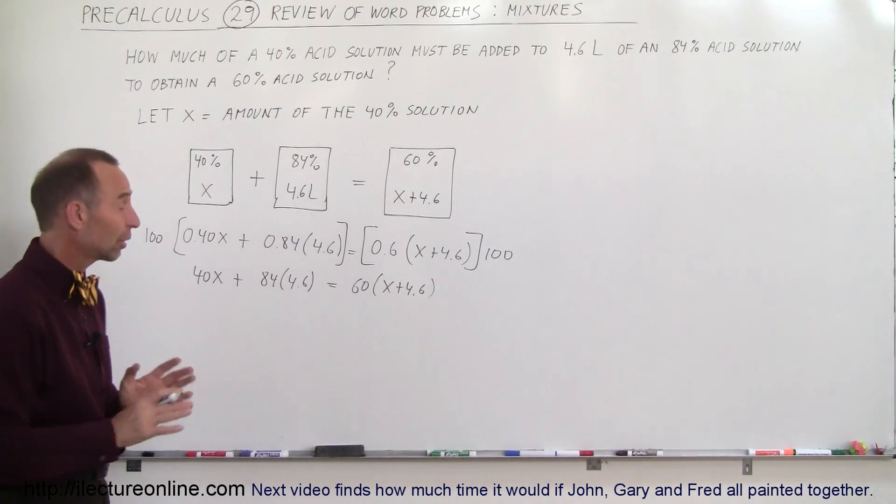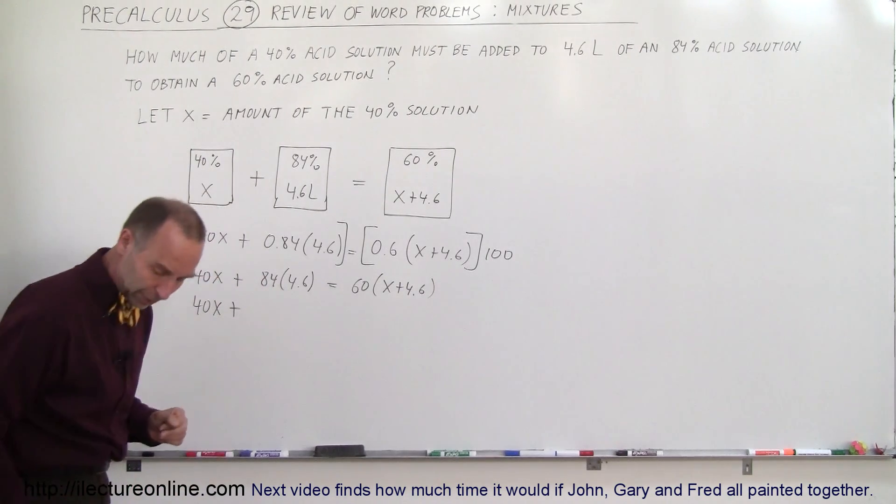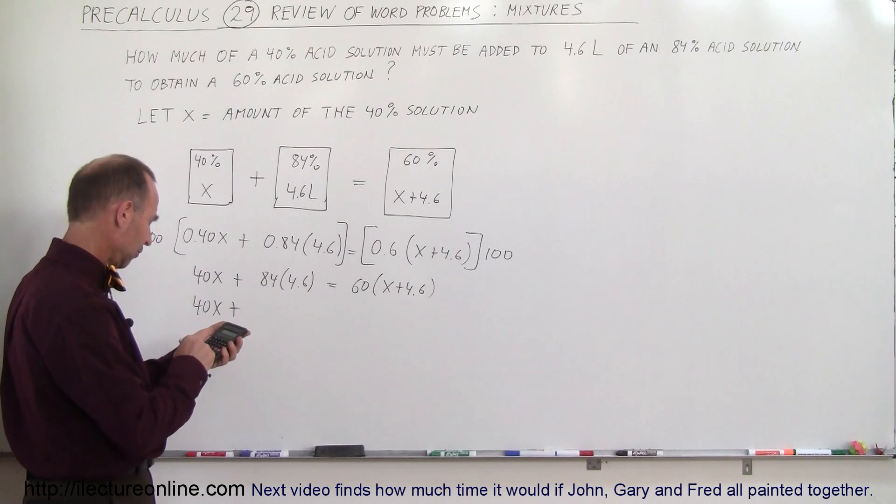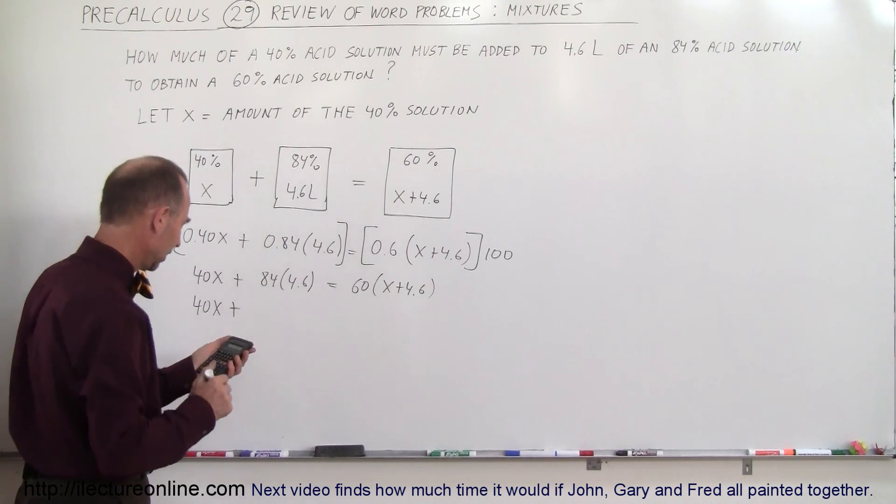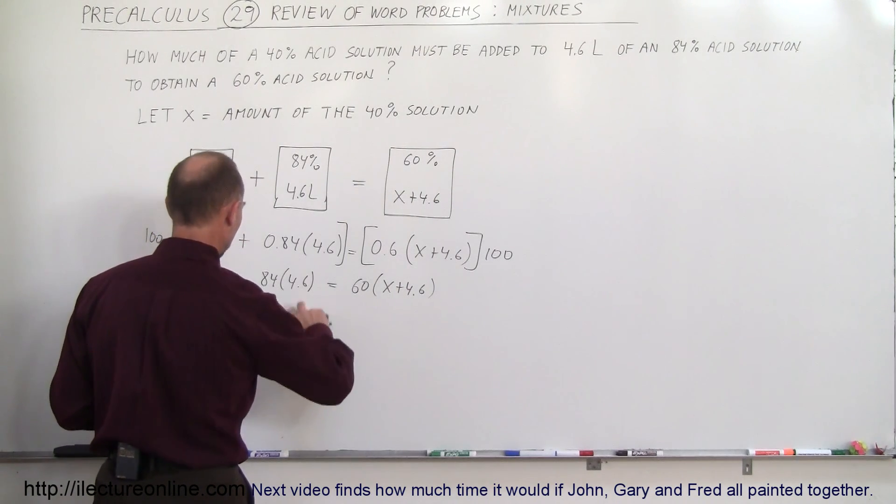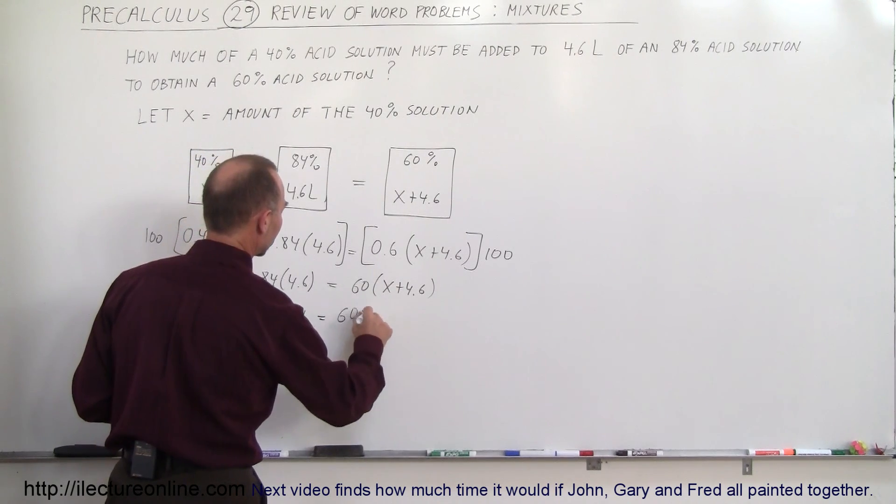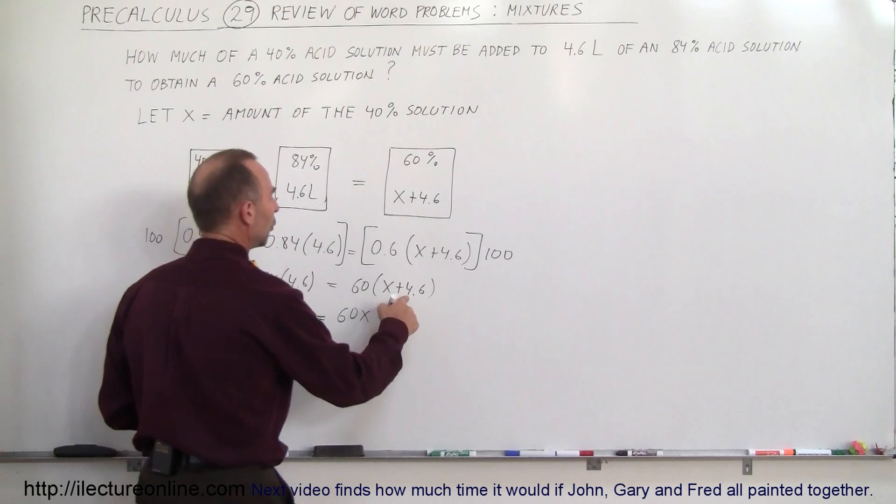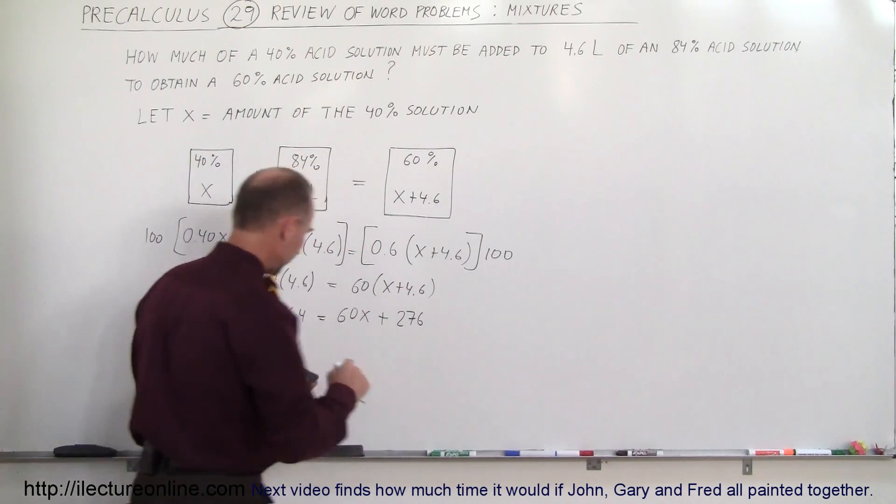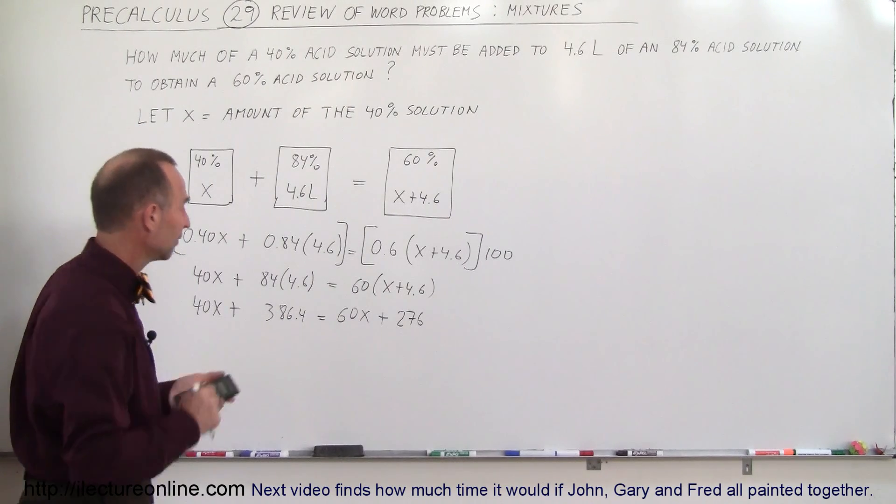The next thing we want to do is get rid of the parenthesis. So 40X plus, and let me work that out with a calculator. It's a little faster. So we have 84 times 4.6 equals, that would be 386.4. So 40X plus 386.4 is equal to 60X plus, that would be 240 plus 36, that would be 276. Quick check, 60 times 4.6 equals 276.